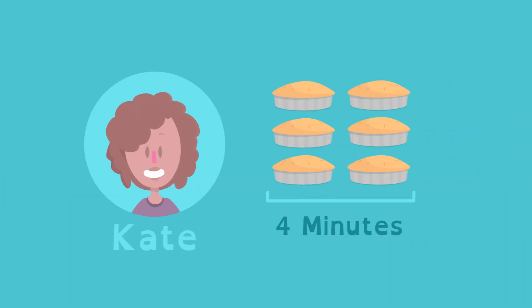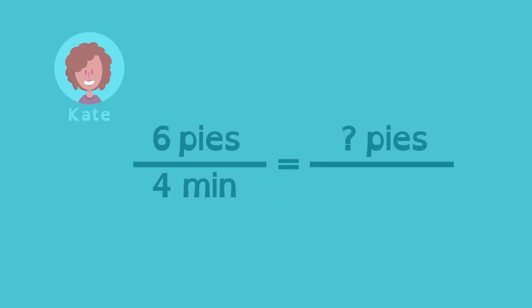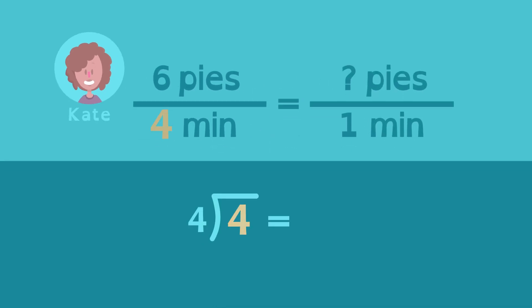We can calculate Kate's unit rate too. She can eat six pies in four minutes. How many pies can she eat in one minute? Four divided by four is one, so six must be divided by four. The unit rate for Kate is one and a half pies per minute.